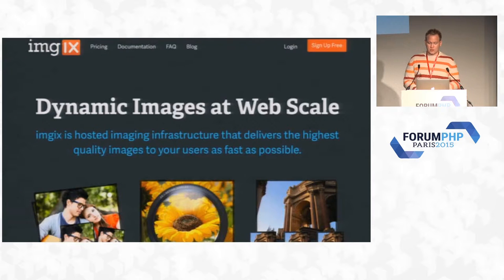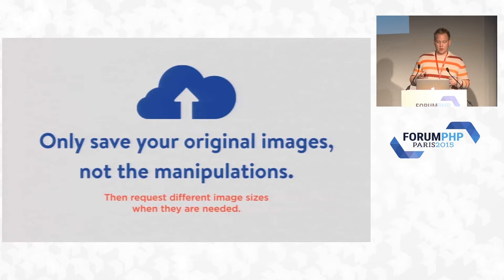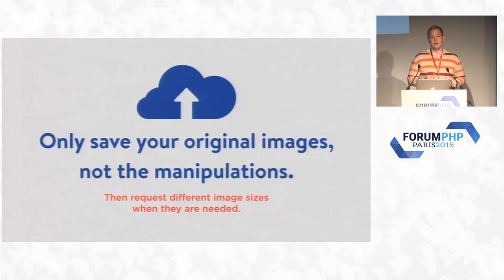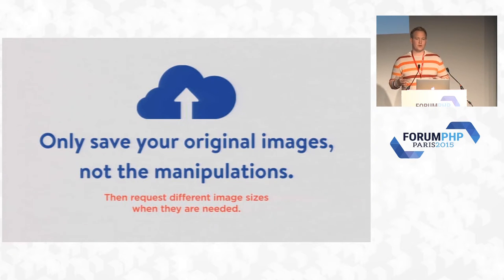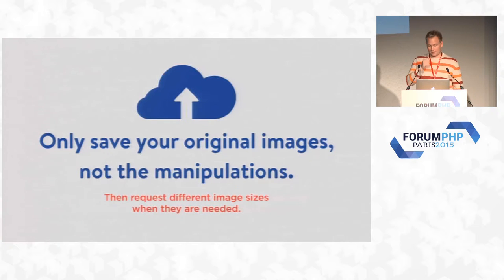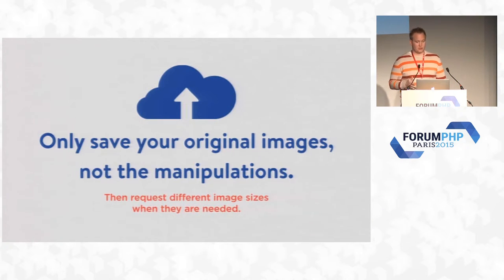As mentioned, you upload your images and you save your original images only — you don't save your manipulated images. You get images from your user, save the source image on your local disk or on S3, and you don't actually save the manipulated version. You just keep the original. Then when you want a manipulated version, you request it using HTTP.